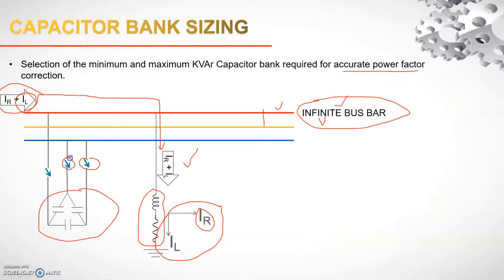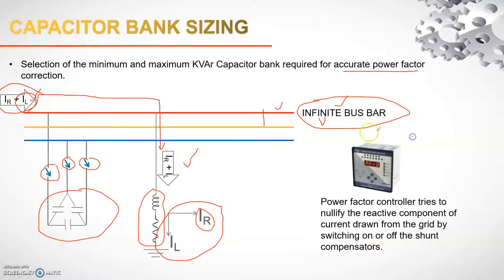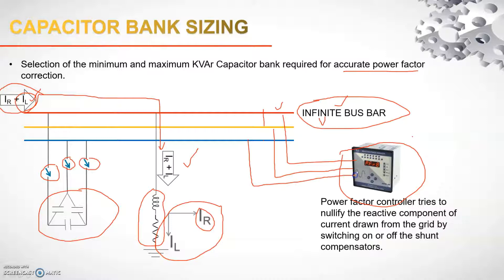The capacitor bank, once connected to the grid through switches, is initially disconnected. Depending on the current IL, the capacitor bank will be connected to the grid by command from the power factor manager or reactive power manager. This manager has all data from the grid — current and voltage data from the CT and auxiliary coils — and continuously monitors the system power factor.